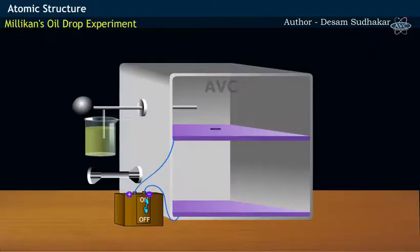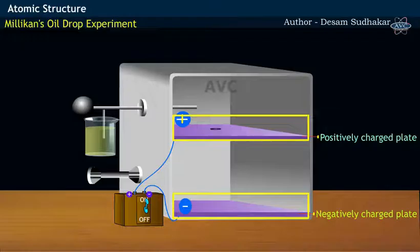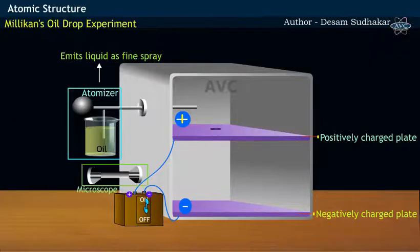The setup of Millikan's experiment consisted of two plates, a positively charged plate and negatively charged plate. These two charged plates are connected to a battery. An atomizer, a device used to emit liquid as fine spray, along with a microscope is arranged. The purpose of this microscope is to observe the movement of tiny oil droplets.